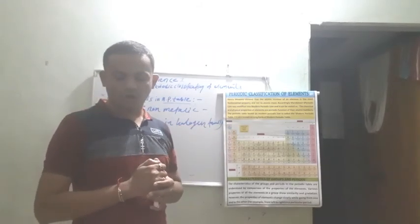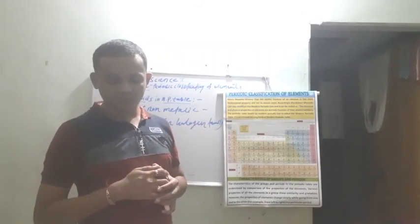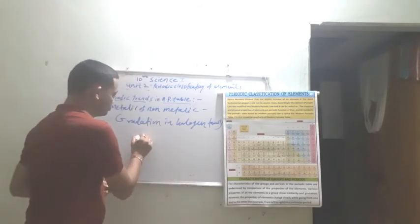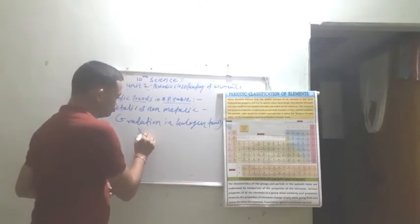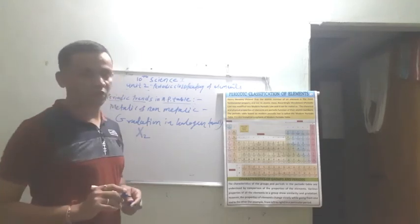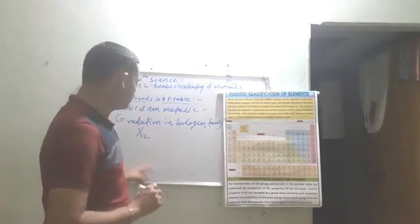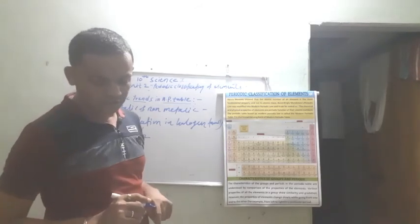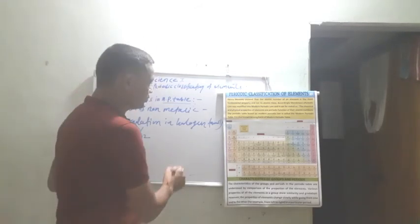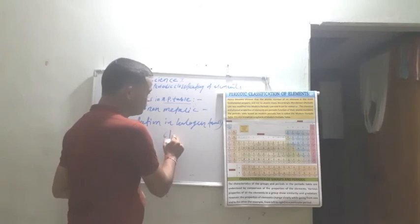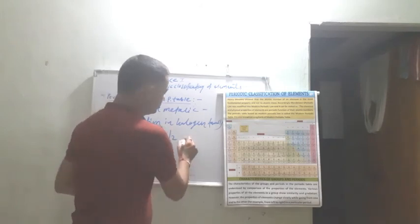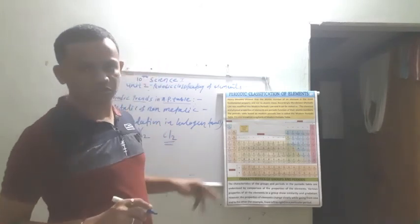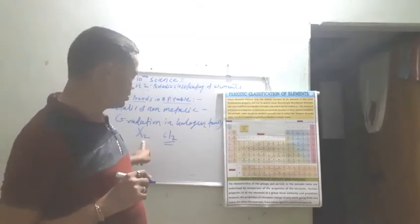Now we will see halogens. The general formula of halogen elements is X2. For example, Cl2. So the general formula is X2. A gradation is observed in the state of halogens going down the group. Fluorine has formula F2, then chlorine, then bromine.